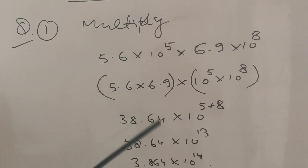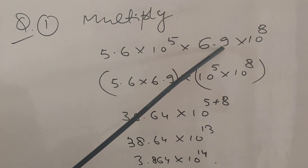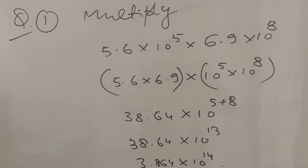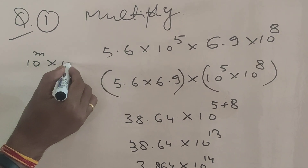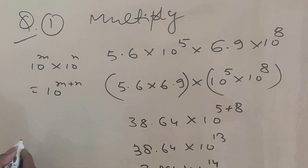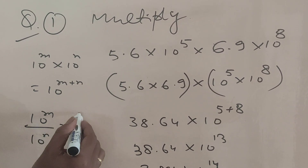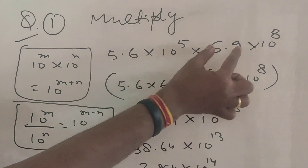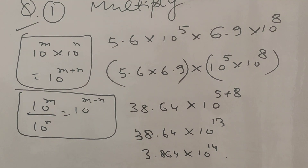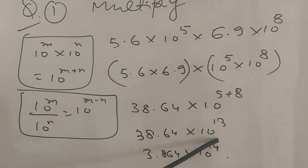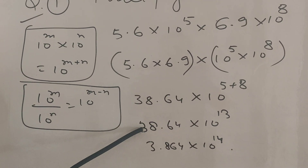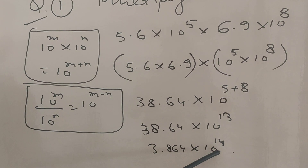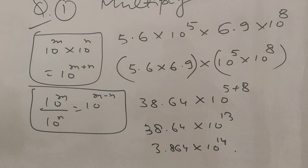For multiplication in scientific notation: multiply the numerical parts separately and apply the rule 10^m × 10^n = 10^(m+n). For example, 5.6 × 10⁵ multiplied by 6.9 × 10⁸: 5.6 × 6.9 = 38.64, and 10⁵ × 10⁸ = 10¹³, giving 38.64 × 10¹³. Since 38.64 exceeds 9.99, shift the decimal: the answer is 3.864 × 10¹⁴.